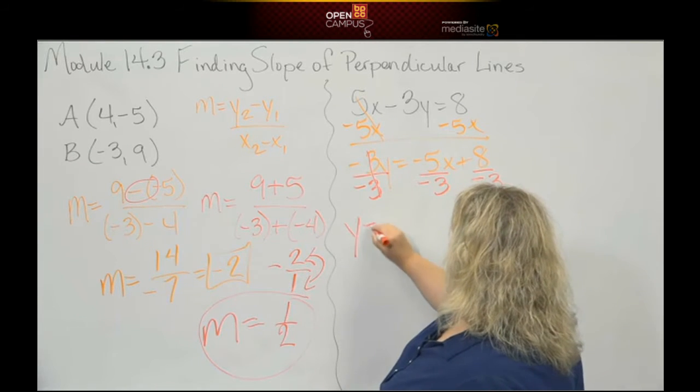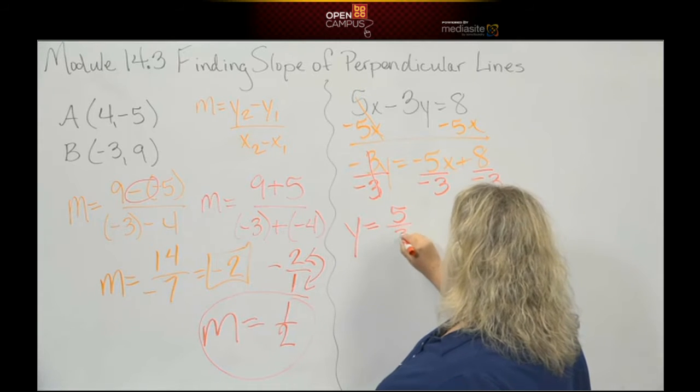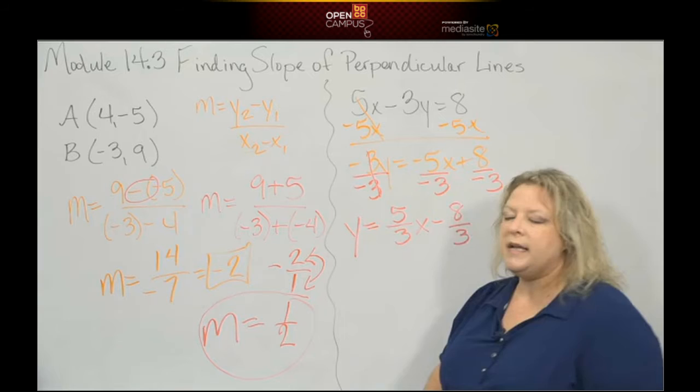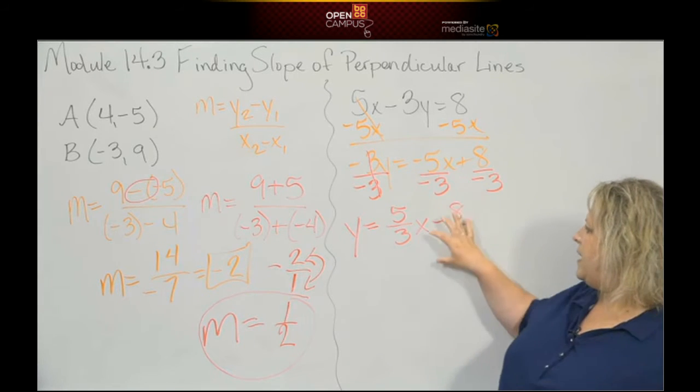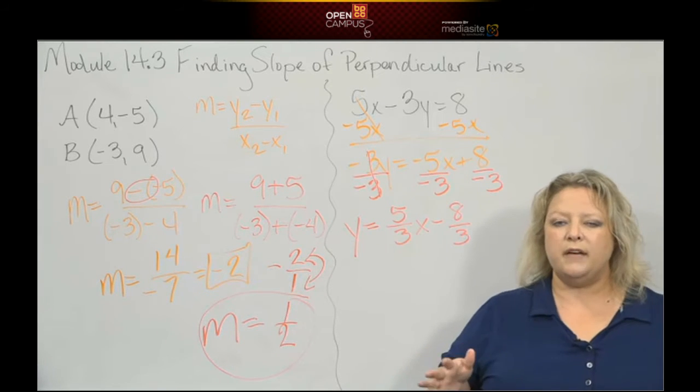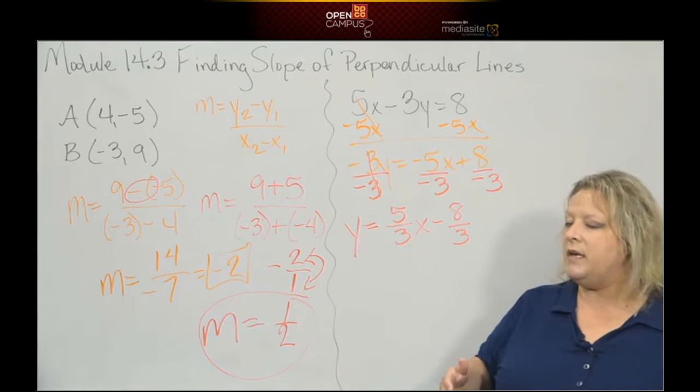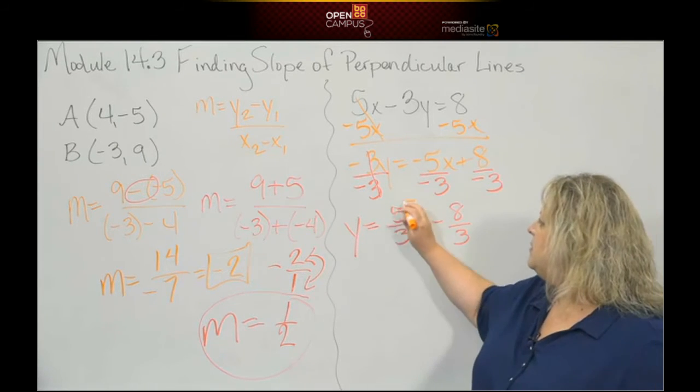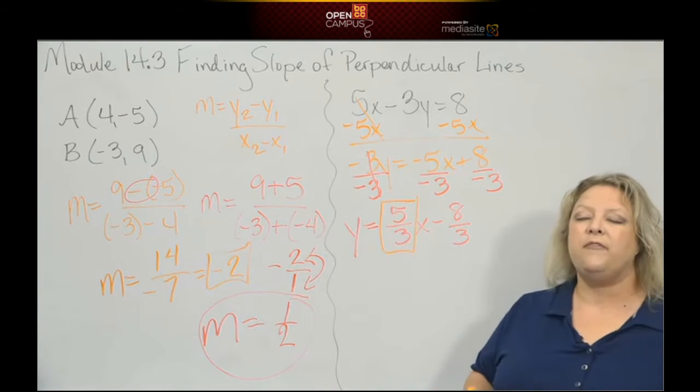And that gives me y is equal to positive 5 thirds x minus 8 thirds. And again, what I said in the previous video is the fact that negative 8 thirds, that's our y-intercept. Who cares? We don't care what it is. I'm not asking you to graph it. All I want you to know is, boom, that's 5 thirds. That is the slope of the original line.